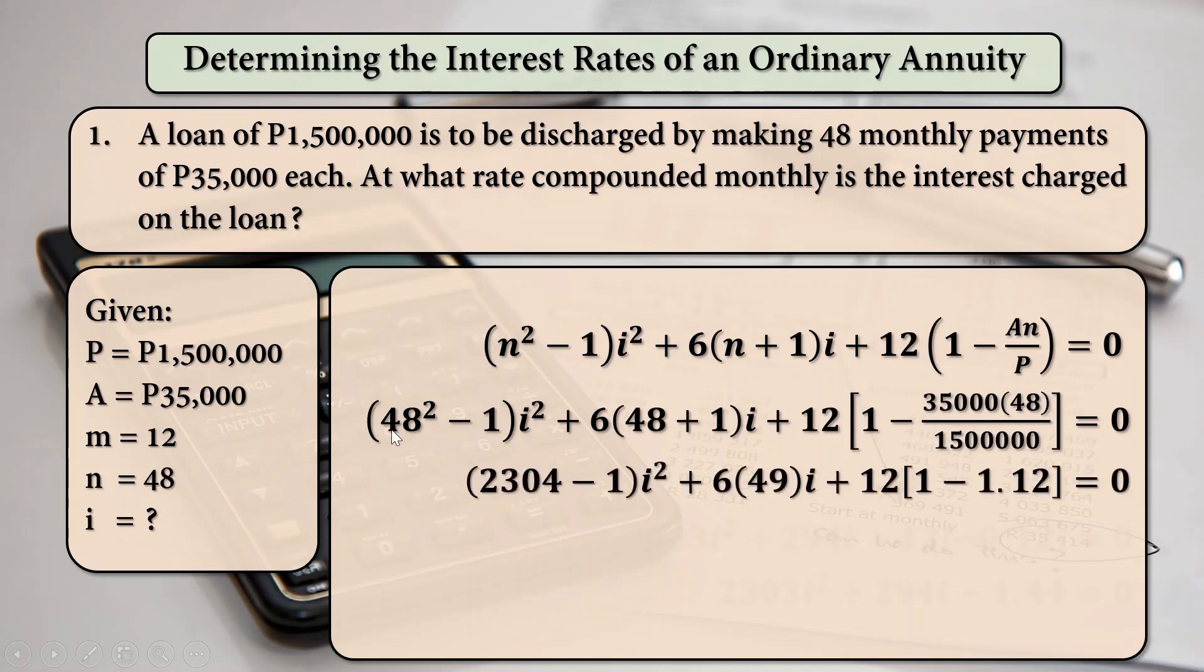And so, simplifying, 48 squared is 2304 minus 1 i squared plus 6 times 48 plus 1, which is 49 times i plus 12 times the quantity of 1 minus 1.12 is equal to 0. So, simplifying further, 2304 minus 1 is 2303 i squared plus 6 times 49 is 294i plus 12 times the quantity of negative 0.12 is equal to 0. And then multiplying 12 by negative 0.12, that will be equal to negative 1.44.